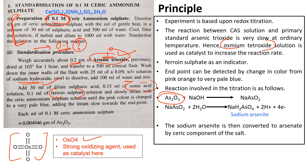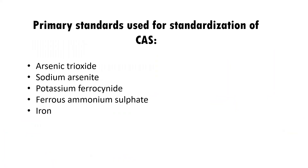During this reaction, arsenic trioxide reacts with sodium hydroxide to form sodium arsenite, which is then oxidized to arsenate by the ceric component. This was all about standardization of ceric ammonium sulfate. Other primary standards used for its standardization include sodium arsenite, potassium ferrocyanide, ferrous ammonium sulfate, and iron.